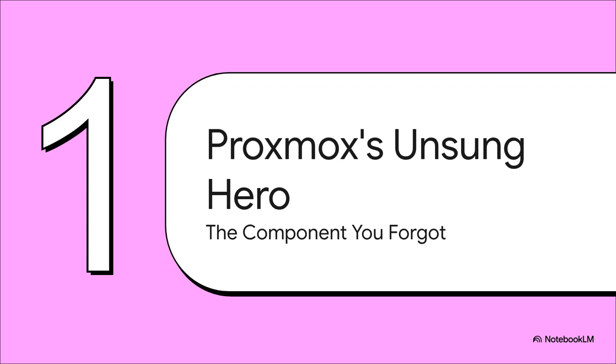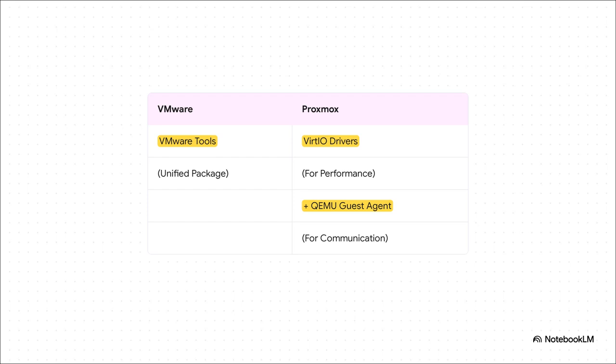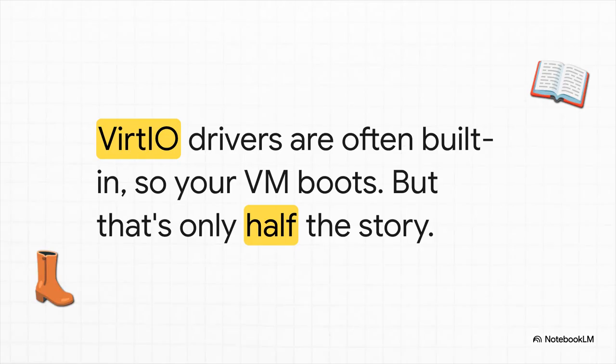Let's go ahead and meet that missing piece. This is the unsung hero of a good Proxmox setup — the one thing that almost everyone, especially people coming over from the VMware world, totally forgets about. And this slide right here is the core of the whole misunderstanding. In VMware, you're used to one single thing: VMware Tools. You install that one package and it does everything. Proxmox, on the other hand, splits that job in two. You've got the VirtIO drivers, which are all about raw performance for your disks and network. And then you have a completely separate thing — the QEMU guest agent — which is purely for communication and control. This is exactly why it's so easy to miss. Most modern operating systems already have the VirtIO drivers built right in. So you move your VM over, it boots up, the network connects, the disks are there. You think you're done, but you've only got half of the solution working. The whole smart communication layer is just missing.